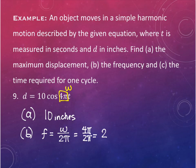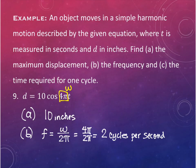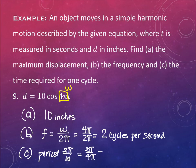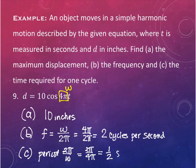Part C: the period, which is the time required for one cycle. Period = 2π/ω = 2π/(4π) = 1/2. Or since frequency and period are reciprocals, the reciprocal of 2 is 1/2. The period is 1/2 second - one complete cycle takes half a second.